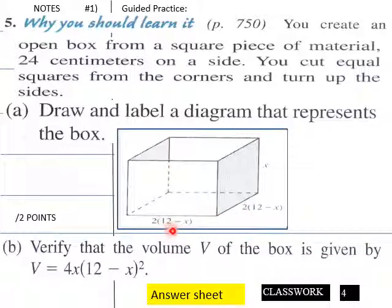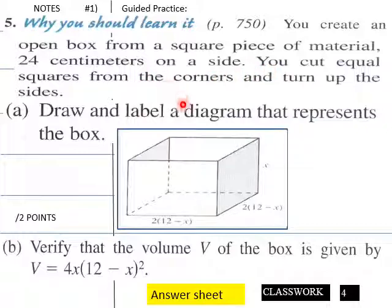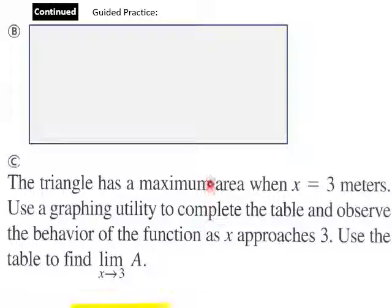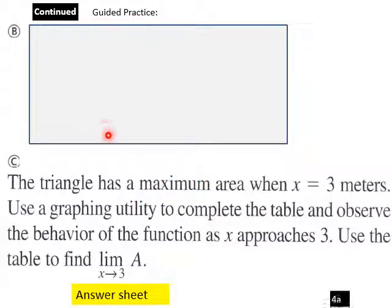Here is the diagram: we have 2 times (12 minus x) on each side — a 24-centimeter square. You cut equal squares from the corners and turn up the sides. Verify that the volume V equals 4x multiplied by the quantity 12 minus x squared. This continues your guided practice.